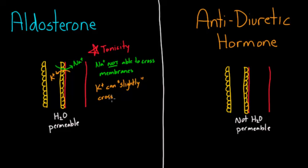So if you have one ion that cannot cross membranes at all, and you give away the ion that can slightly cross membranes, then your tonicity goes up. Because overall, you're getting more ions that are going to stay in the blood vessel. And because they're able to stay in the blood vessel and contribute to tonicity, water is going to be driven into the blood vessels. That's really how aldosterone is dragging water into the blood vessels through increased tonicity.